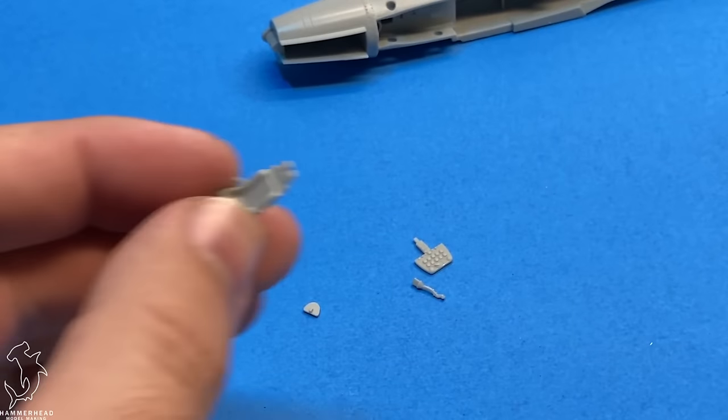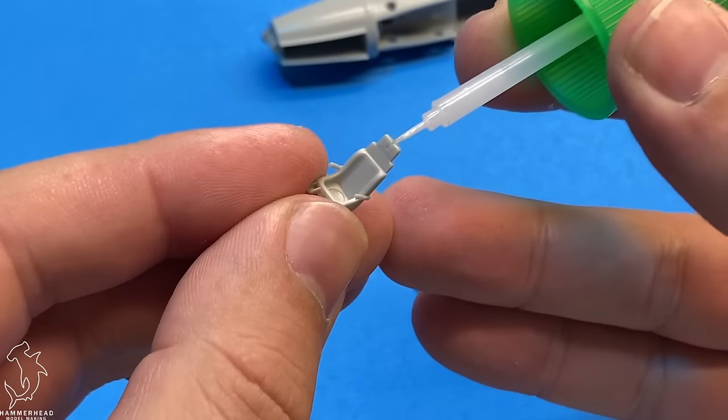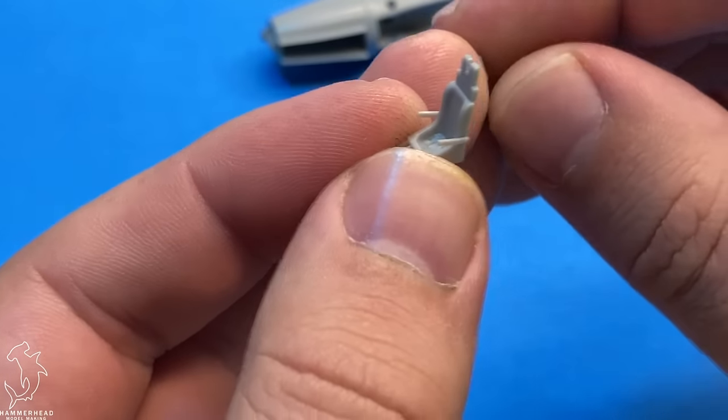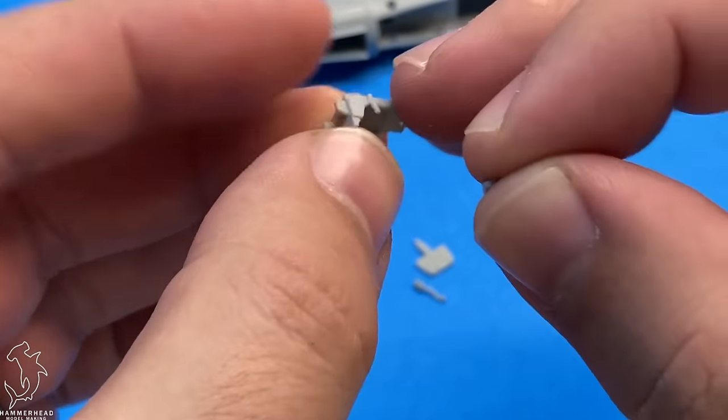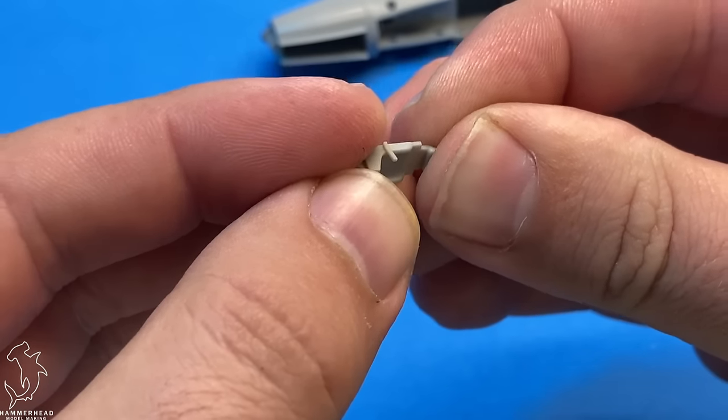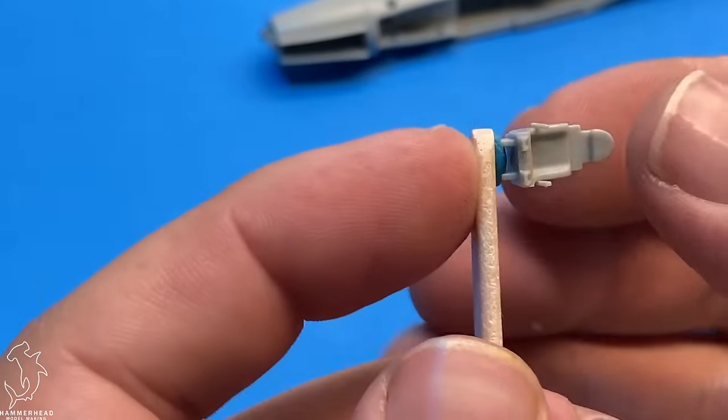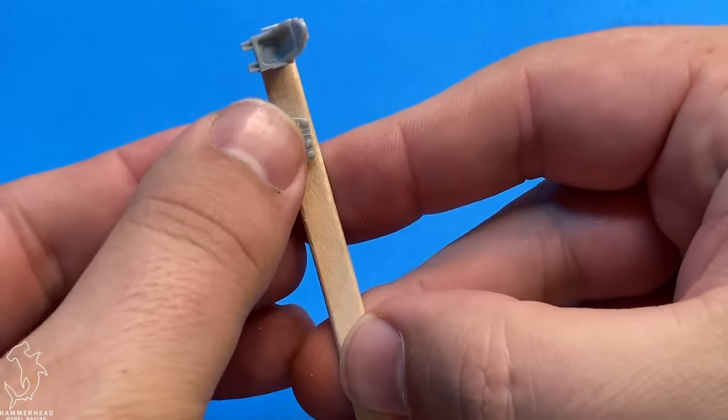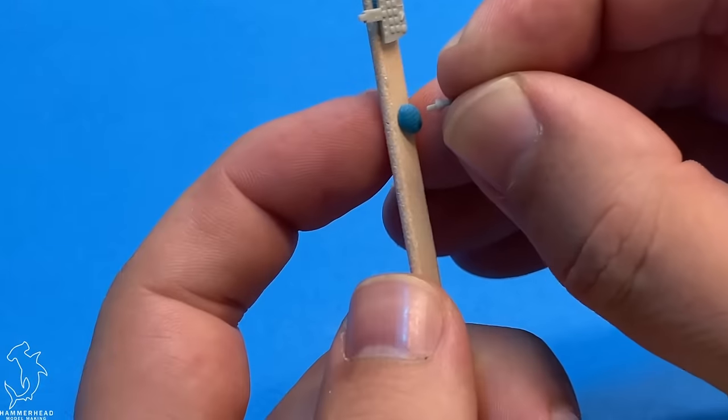So this kit is labeled as one of their quote-unquote easy kits. If you've seen my F8F Bearcat video, you'll kind of get an idea of what we're in for. The entirety of the cockpit consists of four pieces: two parts for the seat, one part for the instrument panel, and one part for the control column. So assembling the cockpit is extremely straightforward.